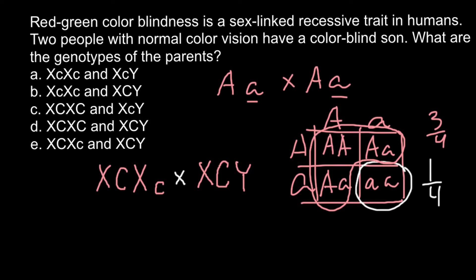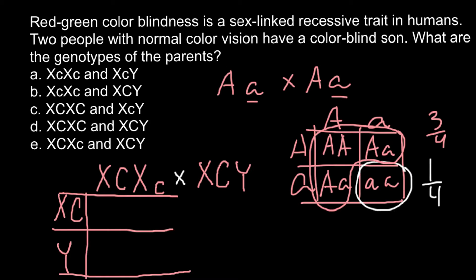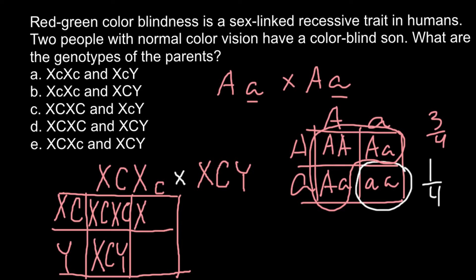So how can these two parents have an affected child? Let us build a Punnett square. On the side would be the genotype of the father: X capital C and Y. We cross with the genotype of the mother on the top. Here we would get X capital C, X capital C — a normal female. This cell would be X capital C and Y — a normal male. Here would be X capital C and X small c, where the small c comes from the mother's side and the normal X chromosome from the father's side — a heterozygous daughter.